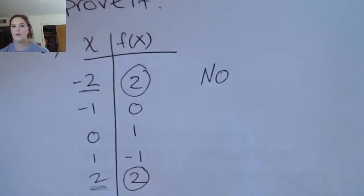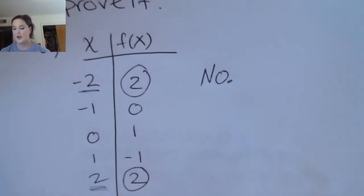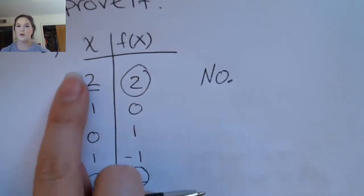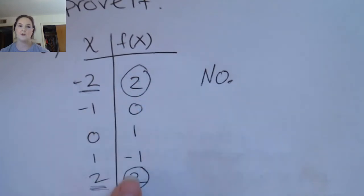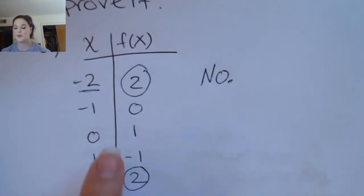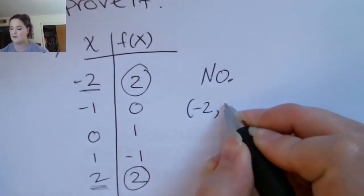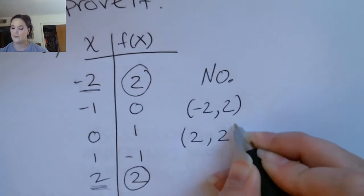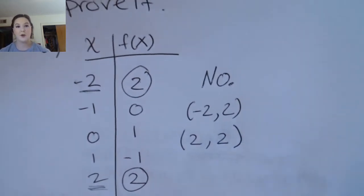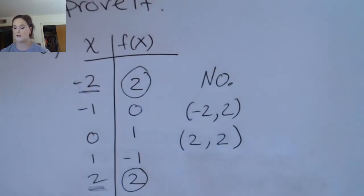So we would say no, this is not one-to-one. The points that prove it are the ones that have the same output — two and two — but they have two different corresponding input values. Those are the points that show this is not one-to-one, because they have the same output and two different input values.